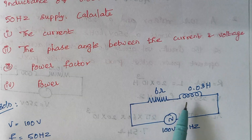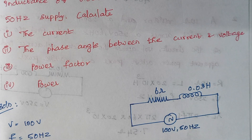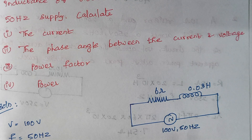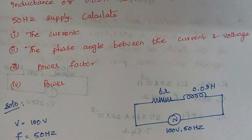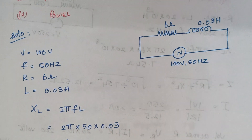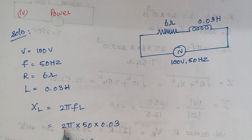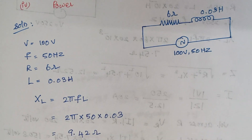Since we have both a resistor and an inductor, we should calculate Z. Once you calculate Z and take the ratio of V by Z, we can get the current. So the first step is to calculate XL. XL is given by 2πFL, where frequency is 50 and L is 0.03.